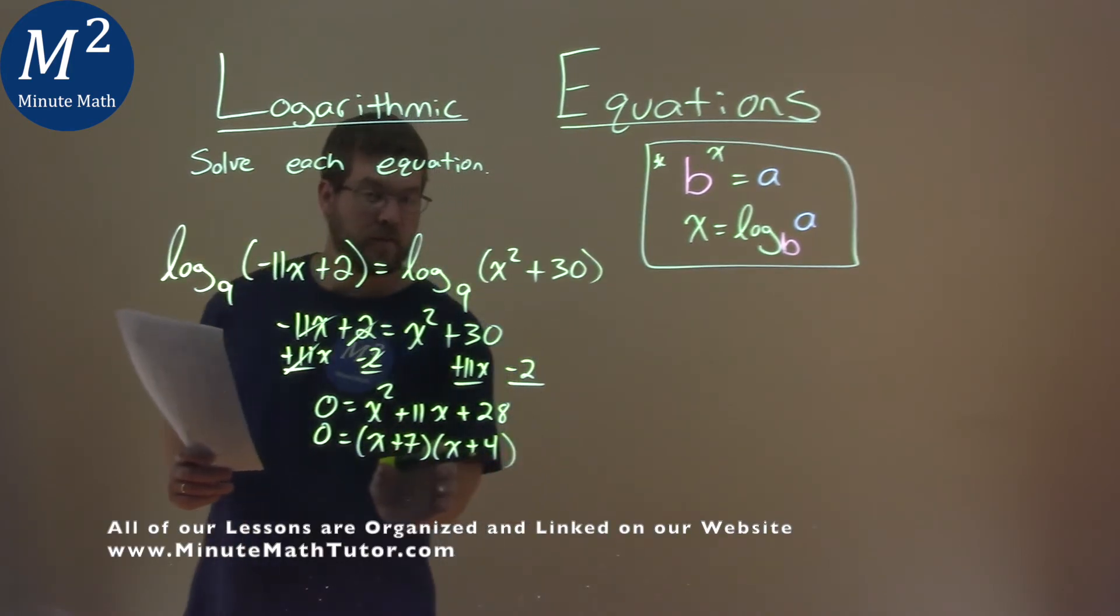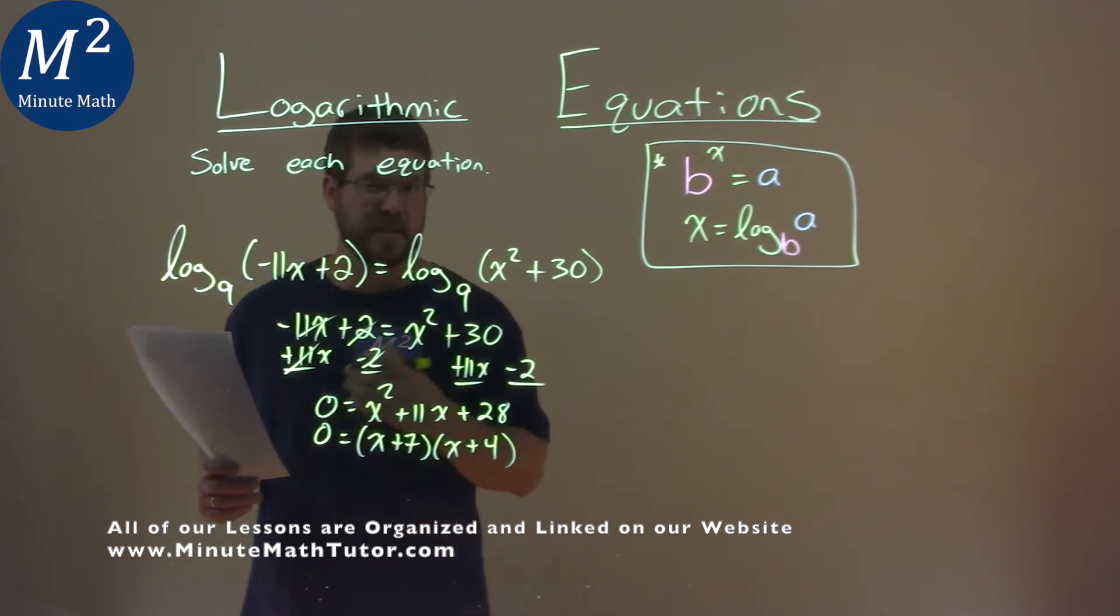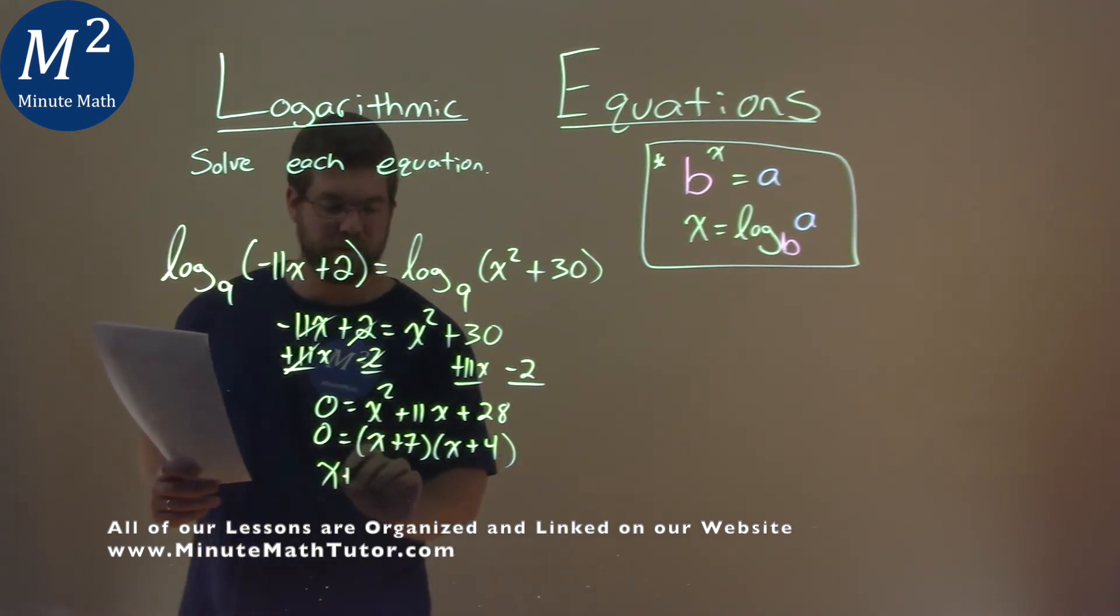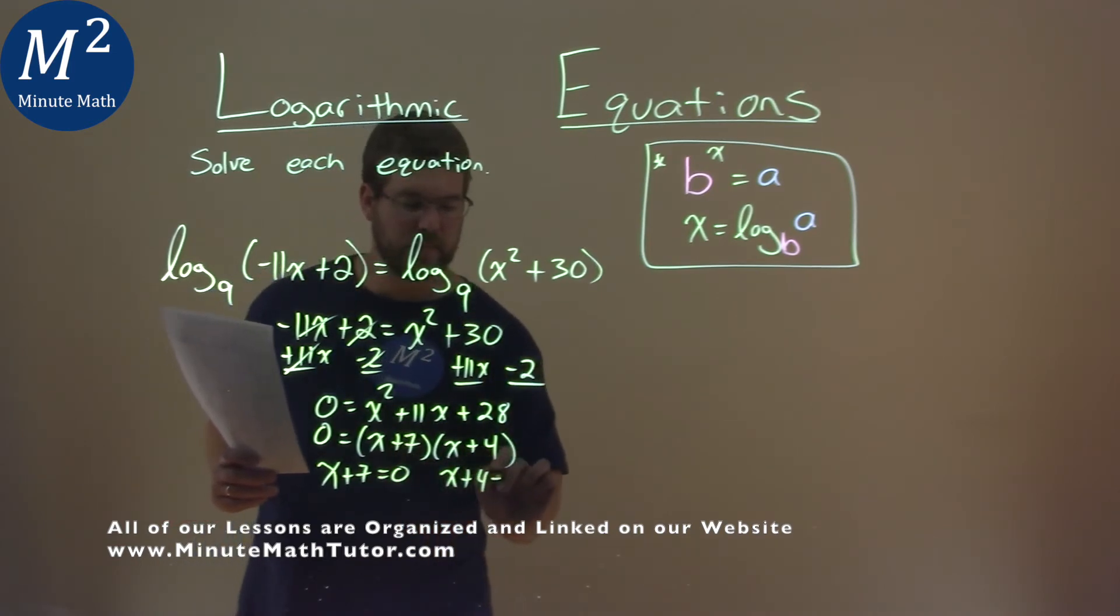So now, since it's factored, we can set each part individually equal to 0. x plus 7, and x plus 4, both equal to 0.